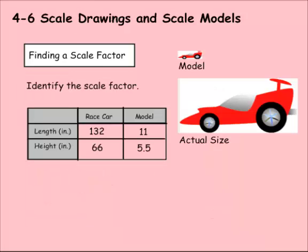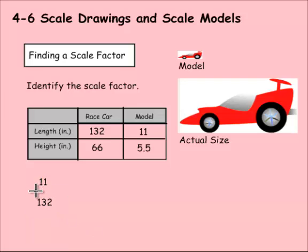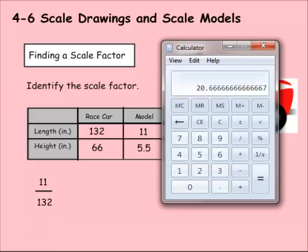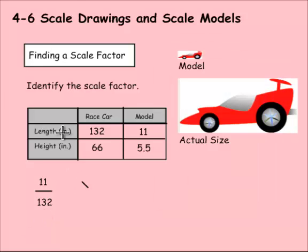Let's identify a scale factor for this race car. We have the model race car here and the actual size here. When you find a scale factor, it should be the model to the actual size — the model is on top, the actual size is on the bottom. The model is 11 inches long and the actual size is 132 inches long. So the scale factor would be 11 over 132. I know these can both be divided by 11, and 132 divided by 11 is 12. So our scale factor is 1 over 12.